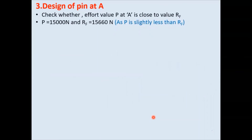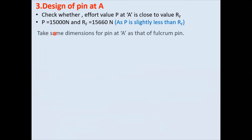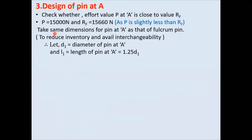Step 3: check the value of P with Rf. P is 15,000 Newton and Rf is 15,660 Newton, which are almost equal. If the diameter of pin at fulcrum is 36 mm, the diameter at effort point would be approximately 34 mm. To reduce variations, reduce inventory, and avail interchangeability, we use the same pin dimensions at the effort point as designed for the fulcrum. So d1 = d and L1 = L.